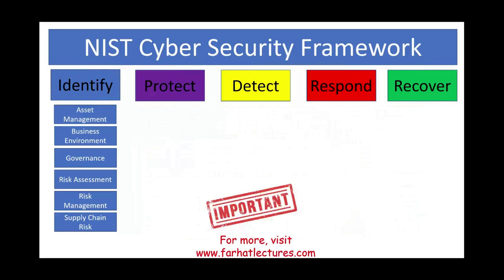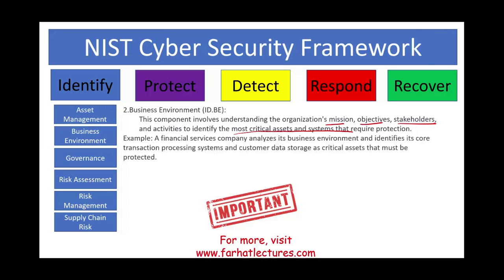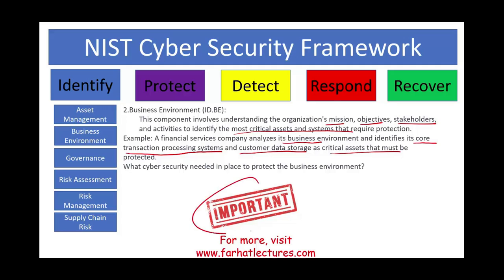The second category under identify is business environment, abbreviated ID.BE. This involves understanding the organization's mission, objectives, stakeholders, and activities to identify the most critical assets and systems that require protection. For example, a financial services company analyzes its business environment and identifies its core transaction processing system and customer data storage as critical assets that must be protected. The key is understanding what components in your business environment are critical to your success.